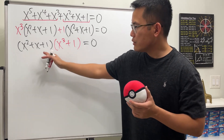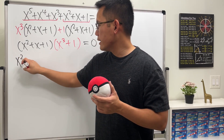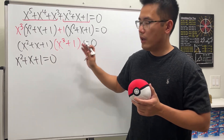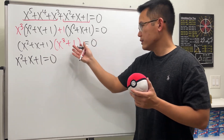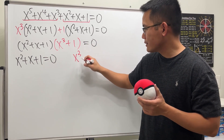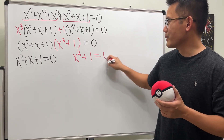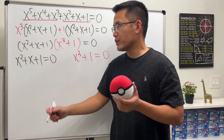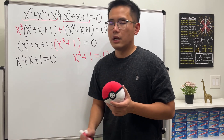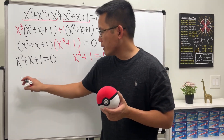Now we can set each factor to zero: x squared plus x plus one equals zero, or x cubed plus one equals zero. We will continue from here using the quadratic formula.